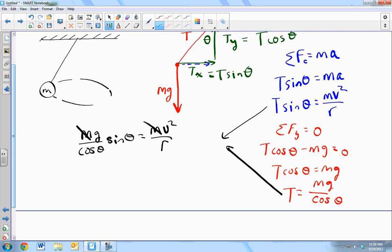Mass divides, goes away. Sine over cosine. And there's one result.